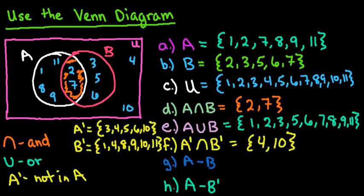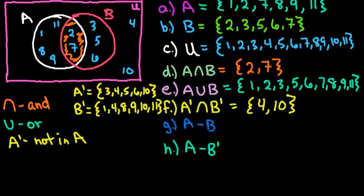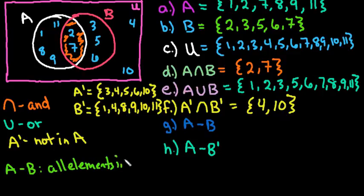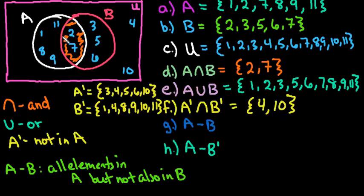For this one here, this is the difference between the two sets. And then A minus B is we are looking for all of the elements in A, but not also in B. So what we're going to do is we're going to be looking for just this region out here. We're looking for those values that are in A, but not also in B. So that would be the 1, the 8, the 9, and the 11.